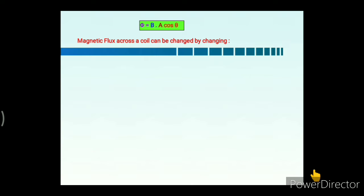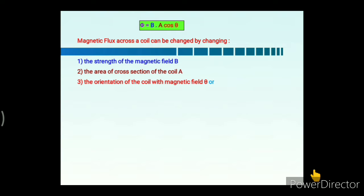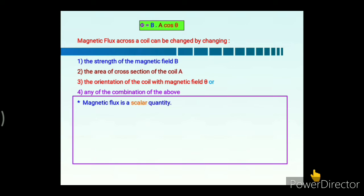The magnetic flux across a coil can be changed by changing the strength of the magnetic field B, the area of cross-section of the coil A, the orientation of the coil with the magnetic field theta, or any combination of these. Magnetic flux is a scalar quantity and its SI unit is Weber or Tesla·meter².